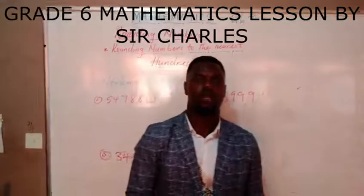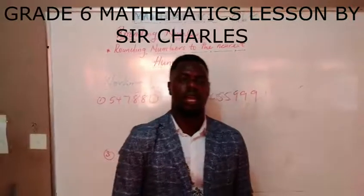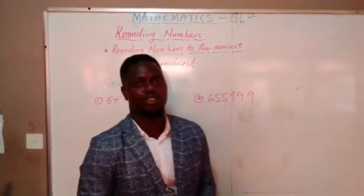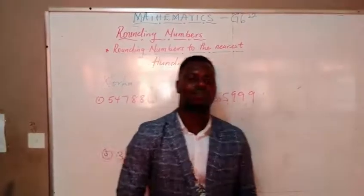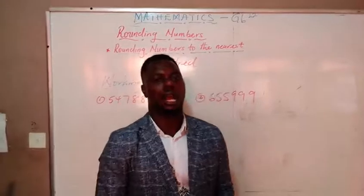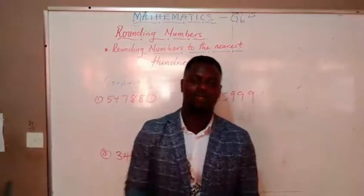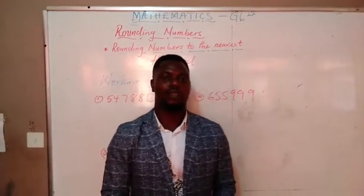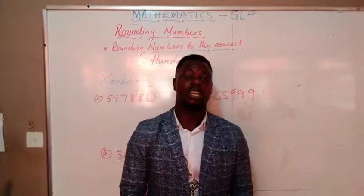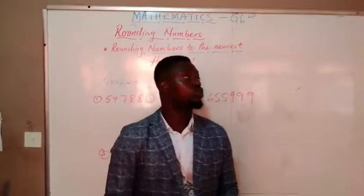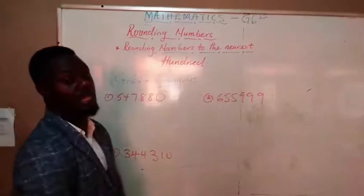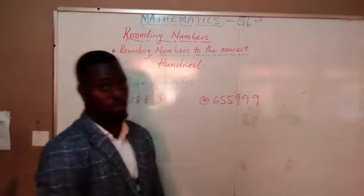How are you all? I hope you are all doing great. Today we are going to look at rounding off numbers — the last part of it. That is rounding numbers to the nearest hundred. You are going to round numbers to the nearest hundred. That is our indicator for today.